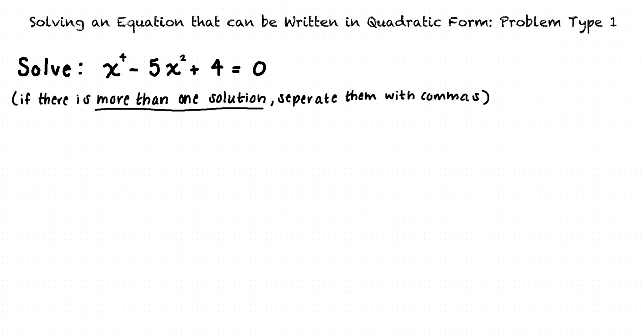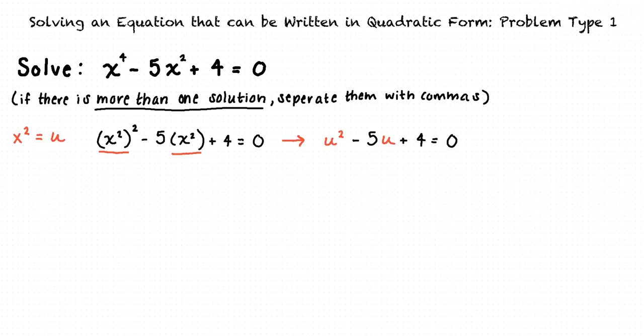And if there is more than one solution, we are asked to separate them with commas. How can we factor this equation to get our solutions if it's not in quadratic form? We will have to begin by transforming this equation into one that is in quadratic form. To do this, we will replace x squared with u, and then our equation becomes u squared minus 5u plus 4 equals 0.